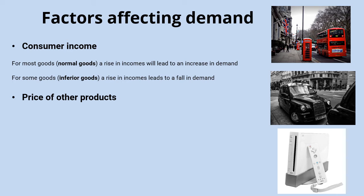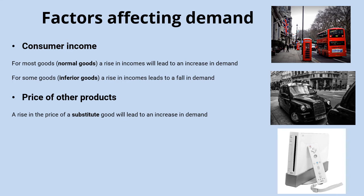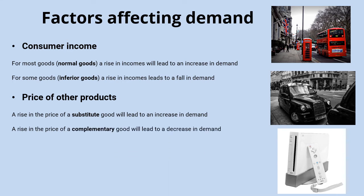The second factor is the price of other products — not the price of the product itself, but the price of related products. With substitute goods, if the price of one good goes up, the demand for the substitute goes up as well. So if the price of taxis increased, you'd expect more people to travel by bus instead, and the demand for bus travel would go up because they're substitute goods.